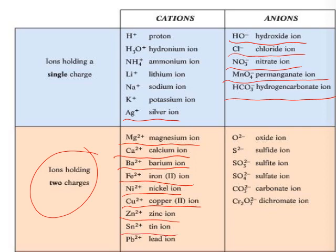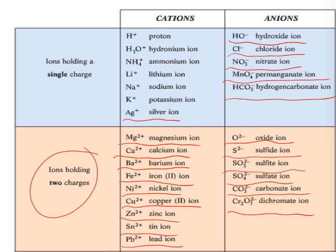Continuing ions: tin Sn²⁺, lead Pb²⁺. Ions holding two negative charges: oxide O²⁻, sulfide S²⁻, sulfite SO₃²⁻, sulfate SO₄²⁻, carbonate CO₃²⁻, dichromate Cr₂O₇²⁻. You must study all of these properly and know the symbol of each in order to solve any exercise.